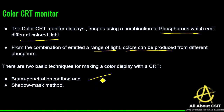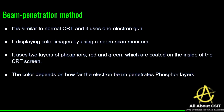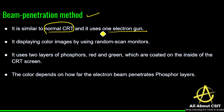The beam penetration method is similar to a normal CRT but uses only one electron gun. It displays color images using the random scan monitor. The color depends on how far the electron beam penetrates the phosphorus layers.